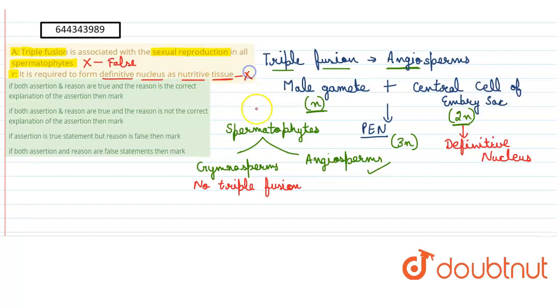Now this is also false. What is nutritive tissue? It is the primary endospermic nucleus. This is the nutritive tissue which is formed by the fusion of male gamete and the central cell. This nucleus of the central cell does not develop into the nutritive tissue.